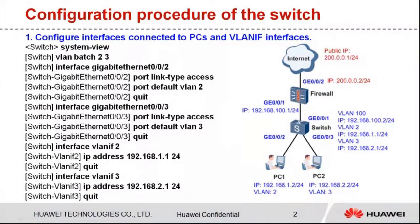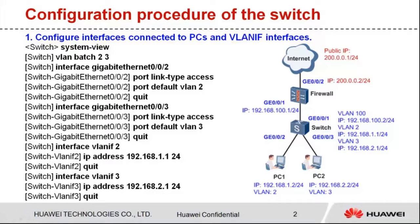Let's move to the configuration procedure of the switch. Four steps are needed. Step 1: Configure interfaces connected to PCs as access interfaces and add them to VLAN 2 and VLAN 3 respectively. Configure corresponding VLAN-IF interfaces. The IP addresses of the VLAN-IF interfaces are the PCs' gateway addresses and are in the same network segment as the IP addresses of the PCs.